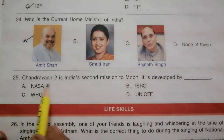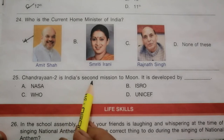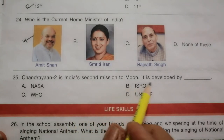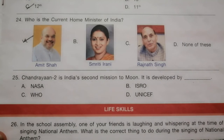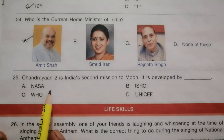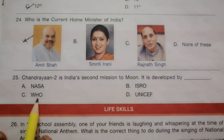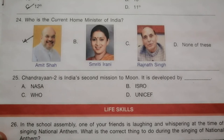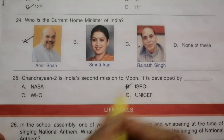Question 25: Chandrayaan 2 is India's second mission to the moon. It is developed by ___. The options are NASA, ISRO, WHO, and UNICEF. The answer is B, ISRO.